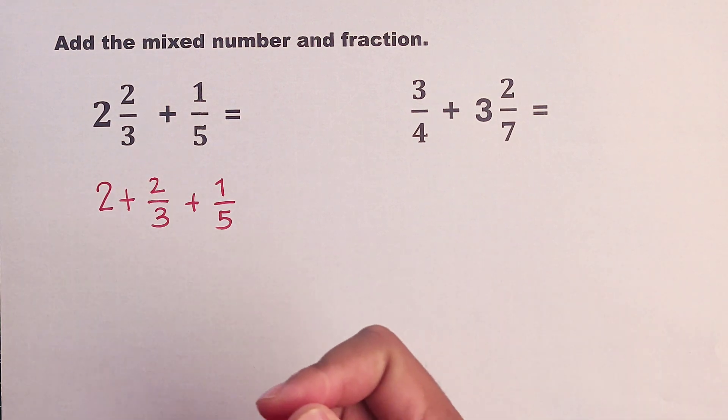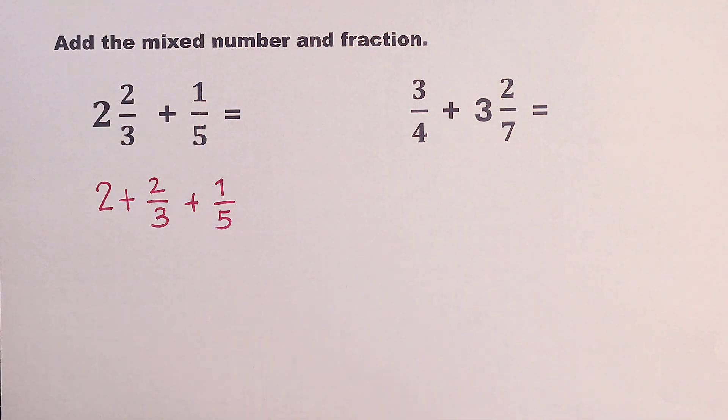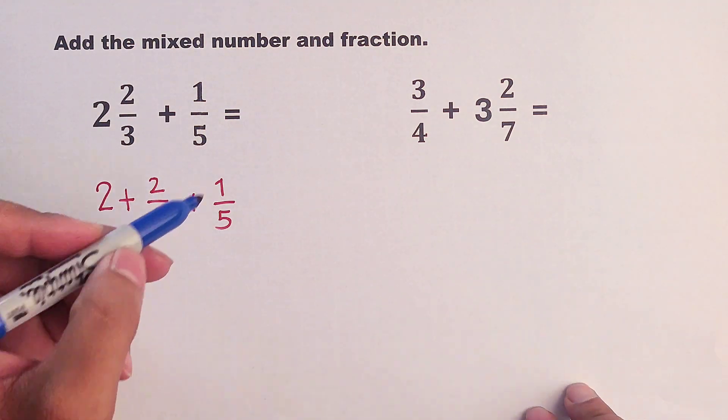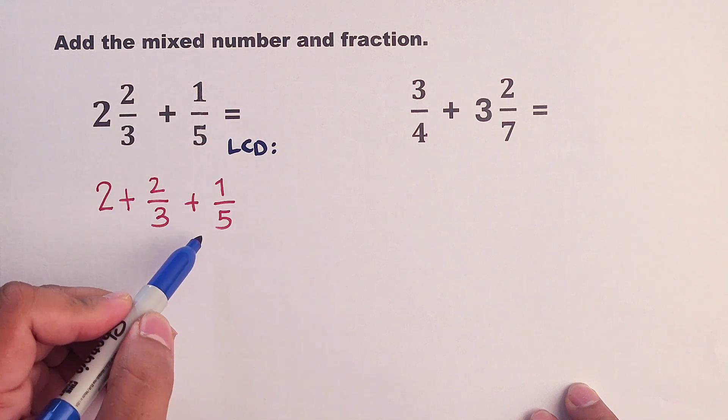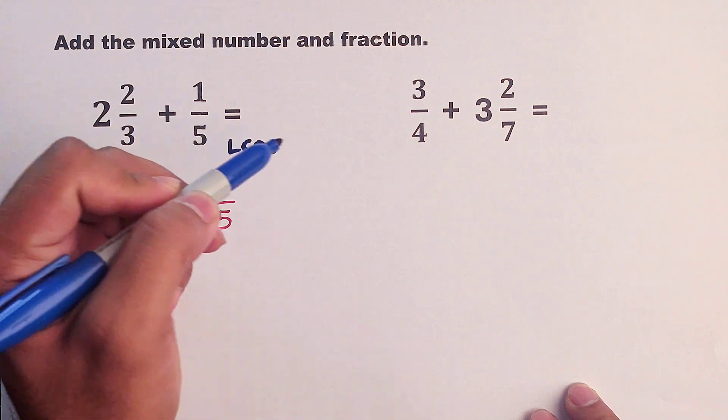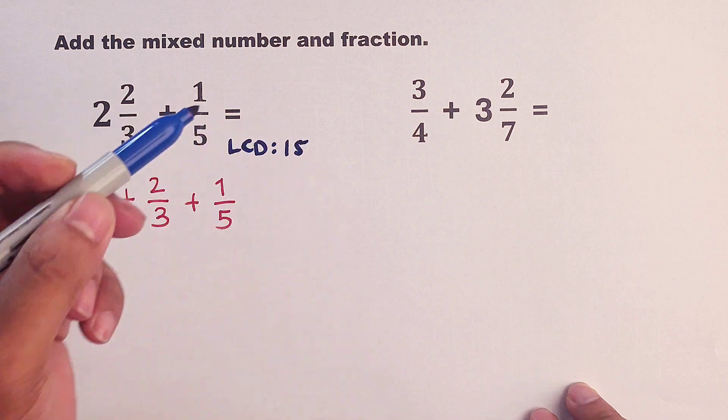In process, we need to think of the LCD between the denominators. So the numbers are 3 and 5. So definitely the LCD is 15.